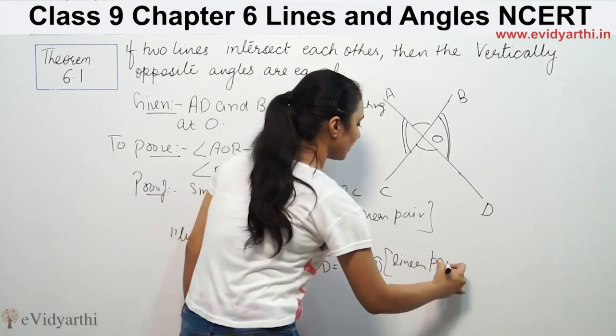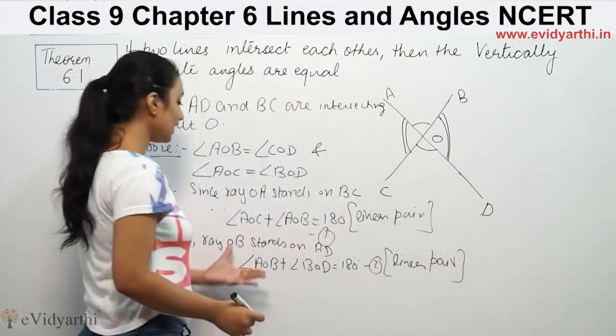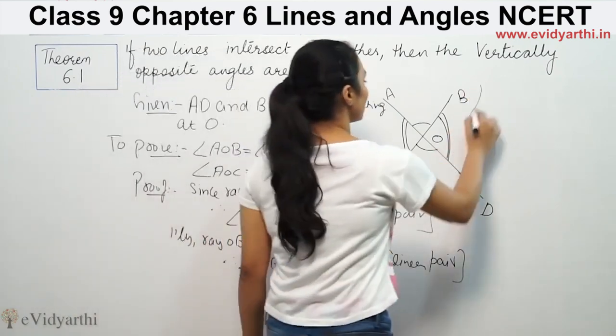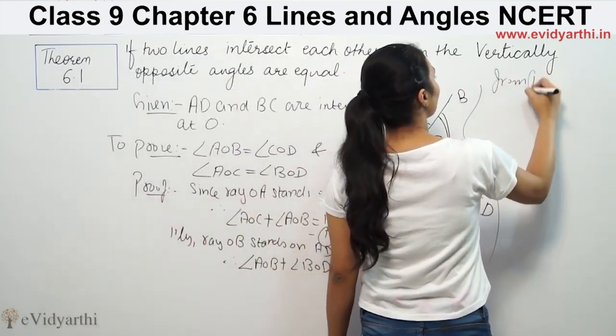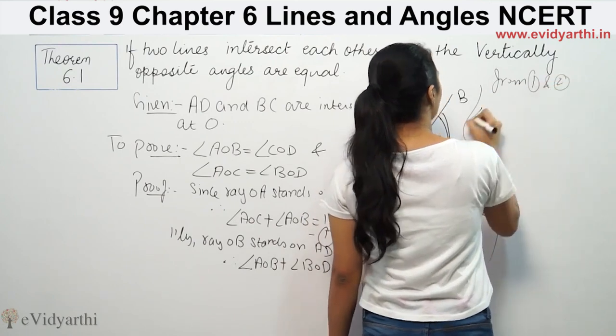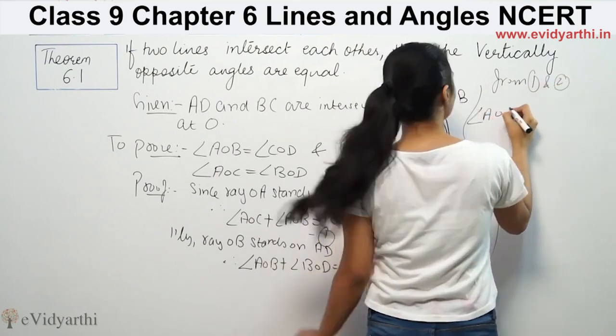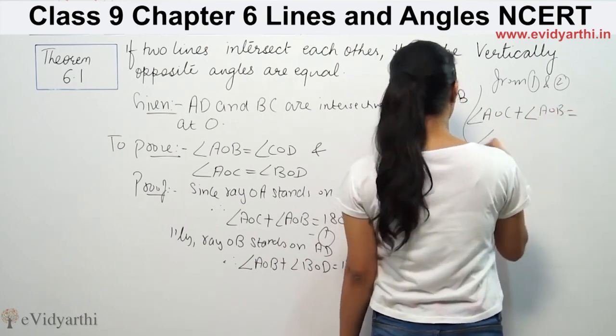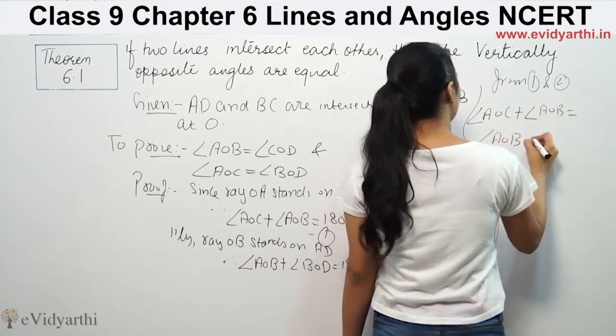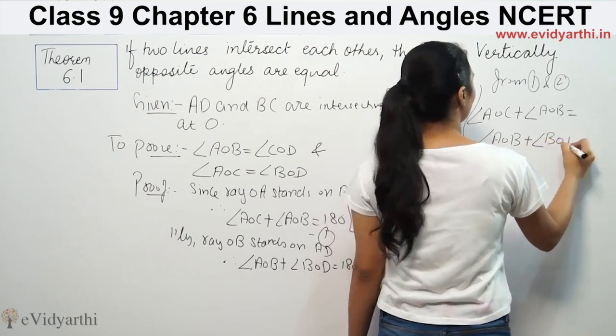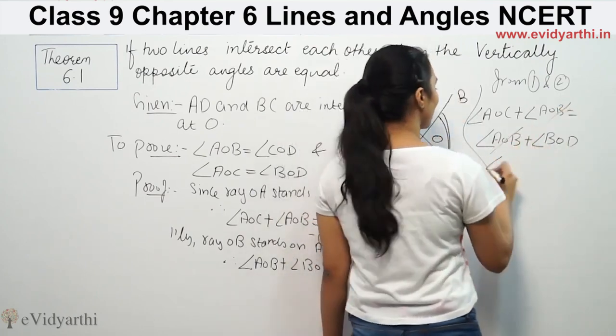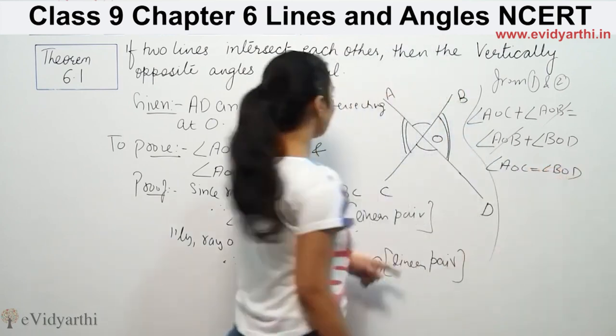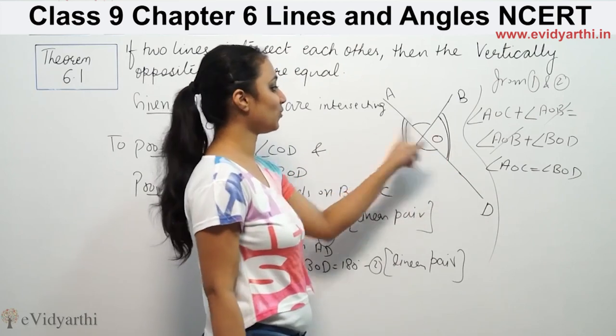Now, from first and second equations, angle AOC plus angle AOB is equal to angle AOB plus angle BOD. So, you're going to cancel AOB. We get AOC is equal to BOD.